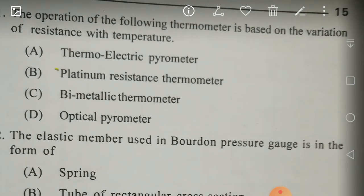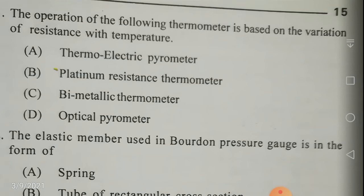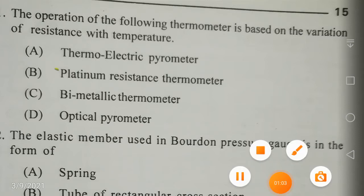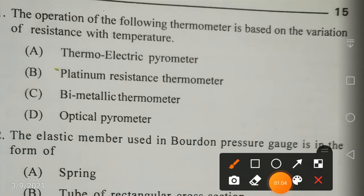The operation of the following thermometer is based on the variation of resistance with temperature — this is your platinum resistance thermometer.